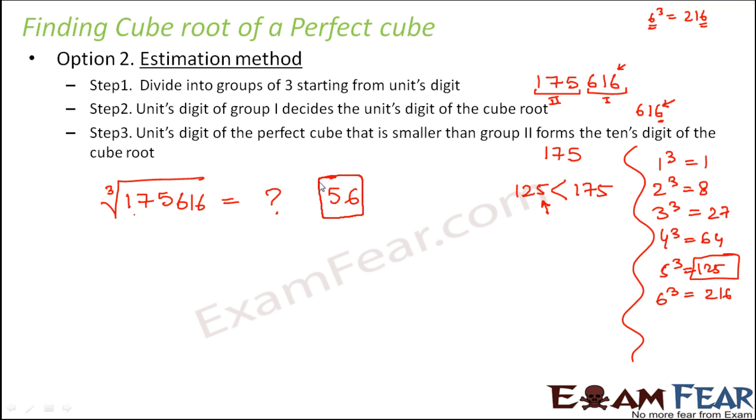So this 5 will become the tens digit of the cube root. So the cube root of this number will be 56 and this is exactly the same result that we obtained by the prime factorization method. So here you would have seen that we did not do any multiplication or division or factorization. We just did a kind of estimation. So that is why it is called estimation method.